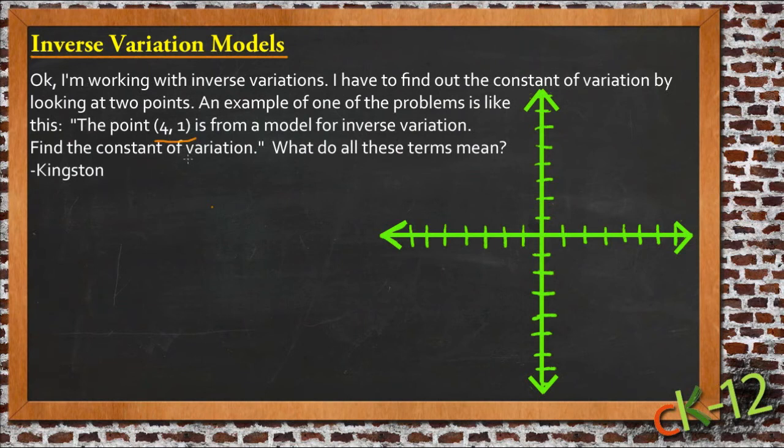He needs to find the constant of variation. So since our inverse variation model looks like y equals k over x, what we need to do to find that constant of variation, that k, is to substitute in the x and y he's given.